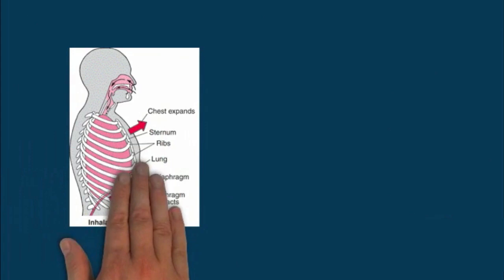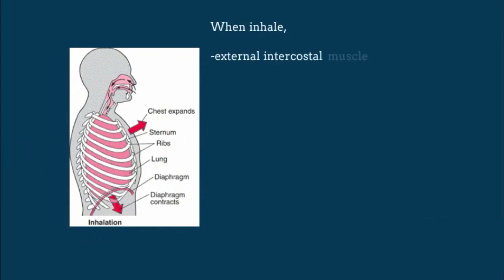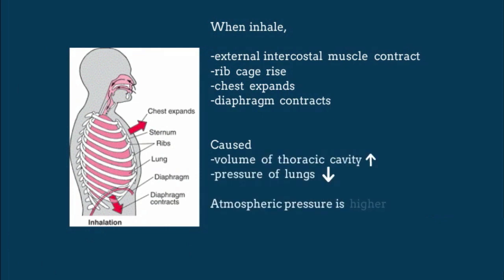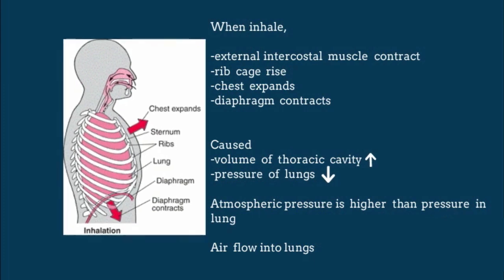When inhaling, the external intercostal muscles contract and the rib cage rises, the chest expands and the diaphragm contracts. This causes the volume of the thoracic cavity to increase and the pressure of the lungs to decrease. Since atmospheric pressure is higher than pressure in the lungs, air flows into the lungs.